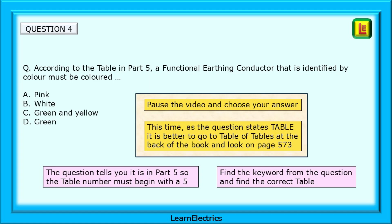For question 4, we are asked, according to the table in part 5, a functional earthing conductor that is identified by colour must be coloured what colour? This time, as the question states table, it is better to go to the table of tables at the back of the book, so look on page 573. The question tells you it is in part 5, so the table number must begin with a 5. Using the key words from the question, find the correct table to refer to.